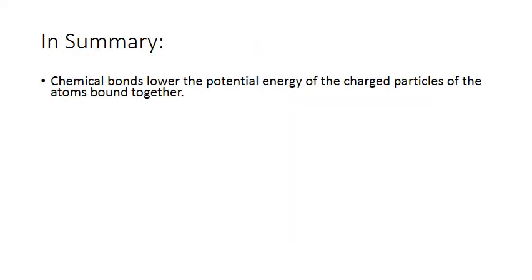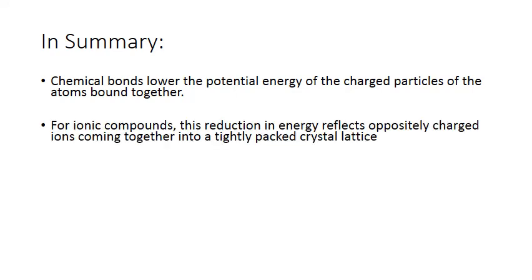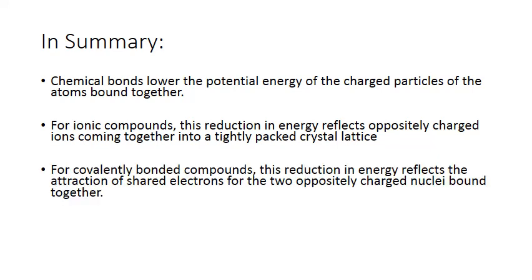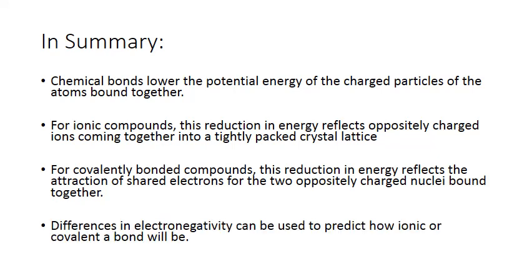In summary, chemical bonds lower the potential energy of the charged particles of the atoms bound together. For ionic compounds, this reduction in energy reflects oppositely charged ions coming together into a tightly packed crystal lattice. For covalently bonded compounds, this reduction in energy reflects the attraction of shared electrons for the two oppositely charged nuclei bound together. Finally, differences in electronegativity can be used to predict how ionic or covalent a bond will be.